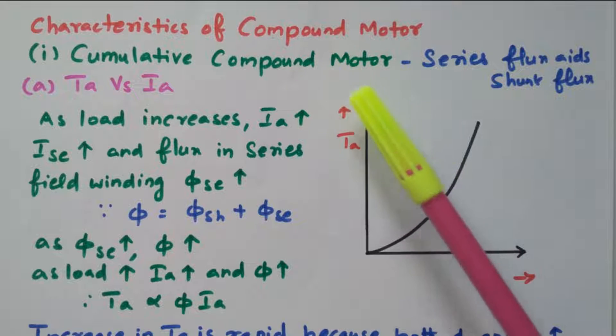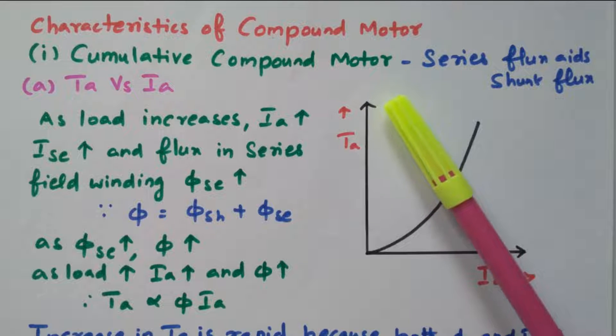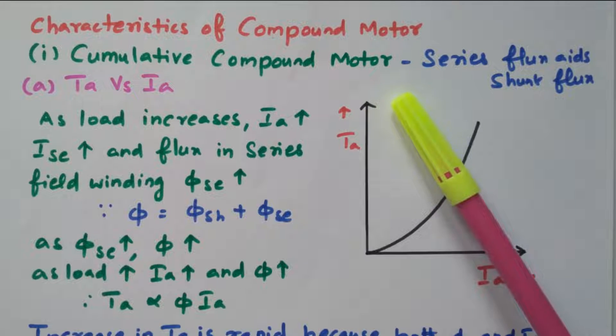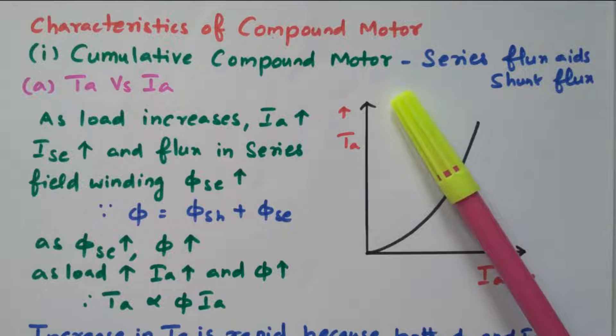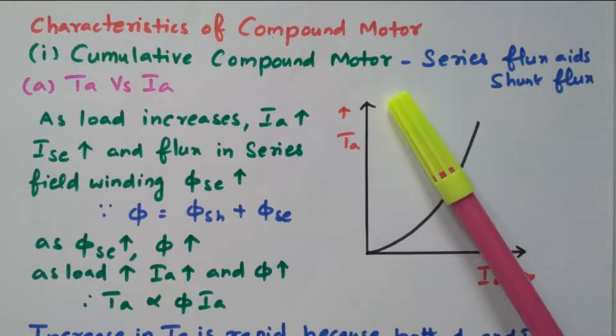The compound motor means we have a series field as well as a shunt field — both are available. Based on the connection, it is divided into cumulative compound and differential compound.